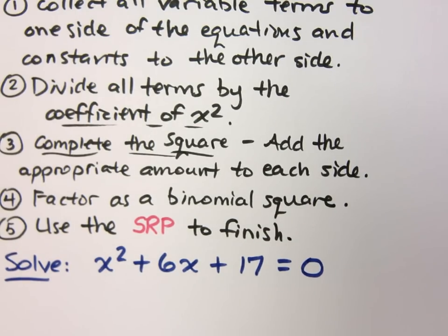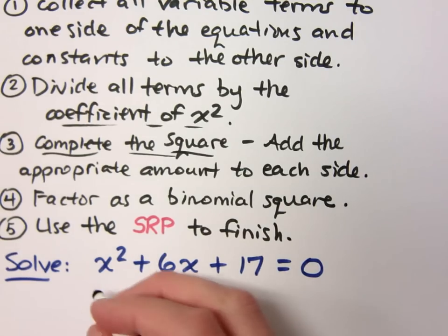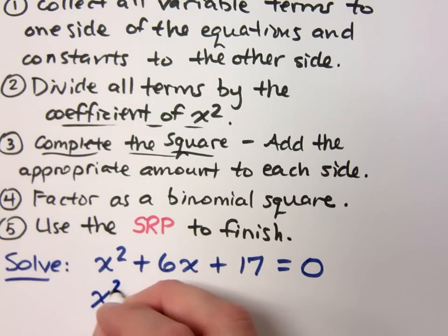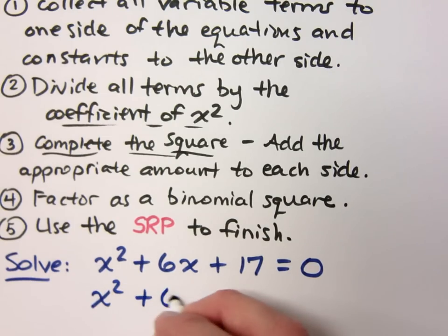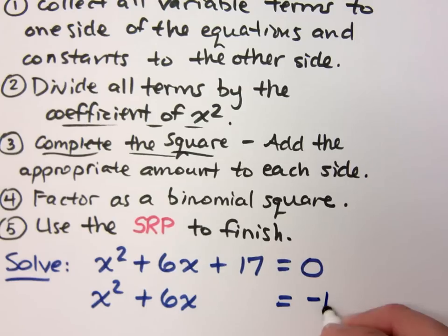The first step says get all variable terms to one side and constants to the other. How do I do that? Just move the 17. Move the 17 over. Now be careful with your signs. That's a negative 17, right? So that's step one.